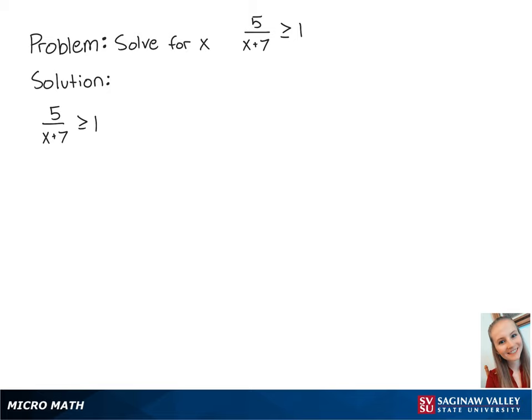For this problem, we're going to solve for x in the inequality 5 over x plus 7 is greater than or equal to 1. First, we want to get the right side equal to 0. So we're going to subtract 1 from both sides so that we have 5 over x plus 7 minus 1 is greater than or equal to 0.